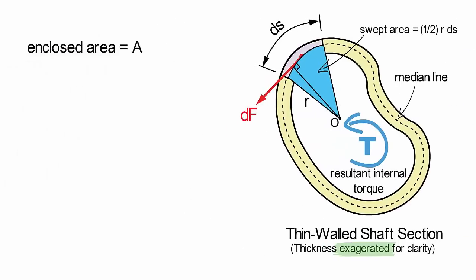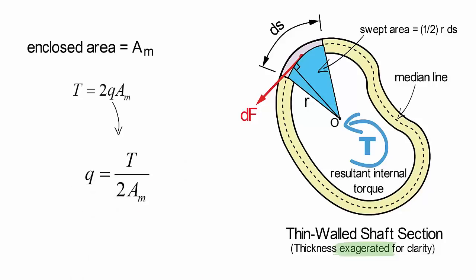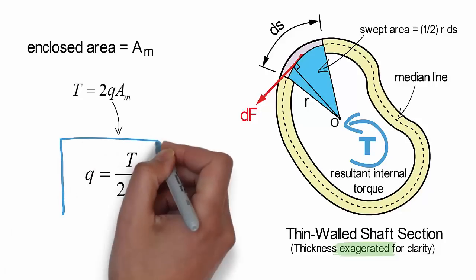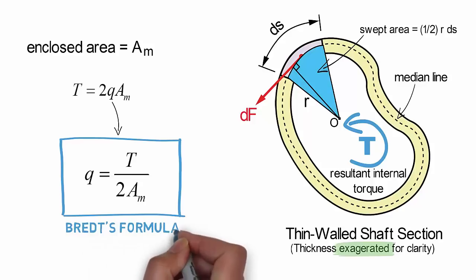Taking this result, we can forget about needing to solve integrals and simply replace the integral with twice the enclosed area. Typically, we are interested in determining the shear flow from the resultant torque, so the equation can be rearranged as follows. This analog to the torsion formula for thin-walled closed sections is commonly referred to as Brett's formula.